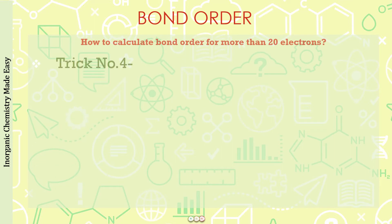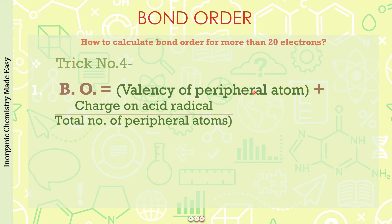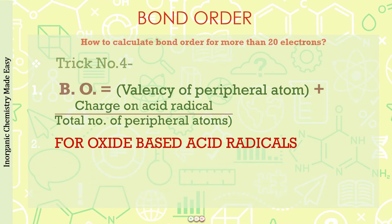Trick number four is probably the trick you have never seen or learned before, and it is going to be very helpful. Bond order equals the valency of the peripheral atom plus the charge on the acid radical, divided by the total number of peripheral atoms. It may seem difficult, but the example will show it is very simple. One limitation: this formula applies only to acid radicals, and specifically oxygen-based acid radicals.